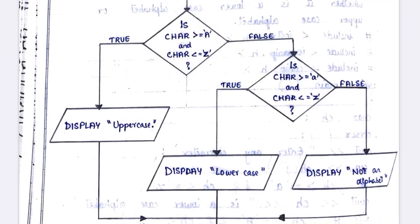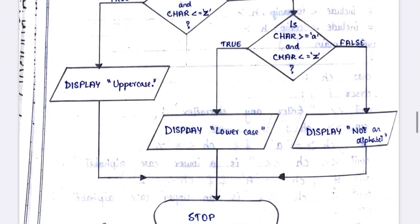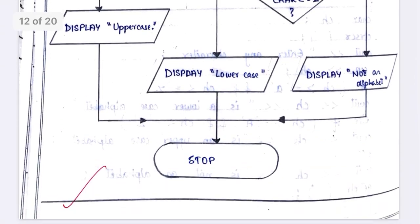Now consider the number 2. First it checks whether 2 comes between capital 'A' and capital 'Z' — false. It comes to the false part and checks the next condition: whether 2 comes between small 'a' and small 'z' — also false. So it comes to the false part again and displays 'it is not an alphabet', then the program terminates — Stop.